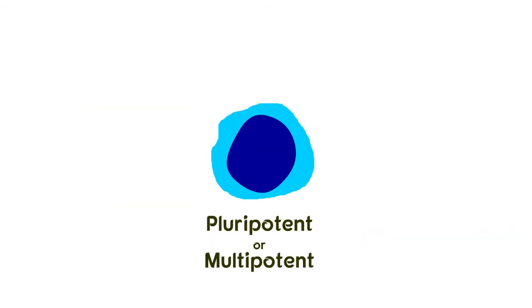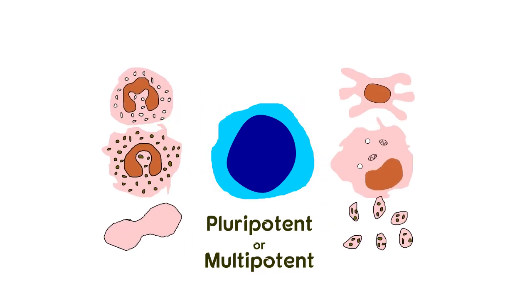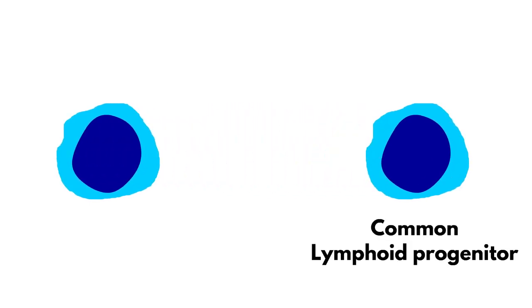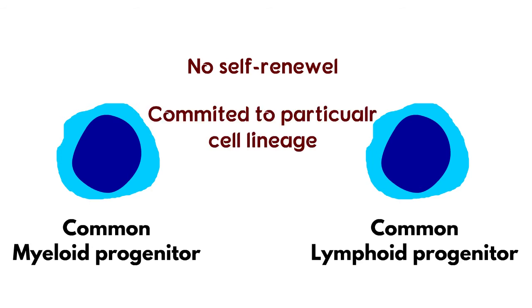Hematopoietic stem cells are pluripotent or multipotent, which means they can differentiate into various other cell types. Early in hematopoiesis, a multipotent stem cell differentiates giving rise to either a common lymphoid progenitor cell or a common myeloid progenitor cell. These progenitor cells do not have the capacity for self-renewal and are committed to a particular cell lineage.